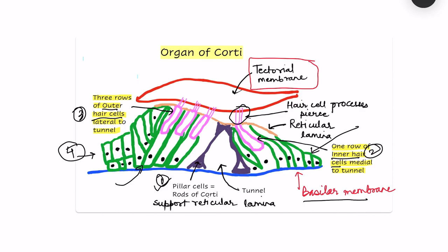The membranes present are the basilar membrane, the tectorial membrane, and another membrane known as the reticular lamina. All the supporting cells extend from the basilar membrane up to the reticular lamina, supporting the hair cells.